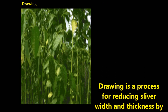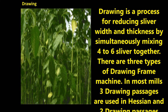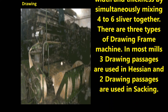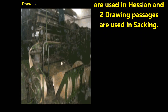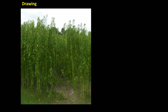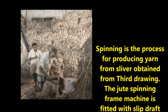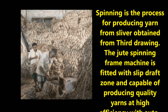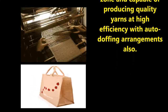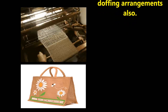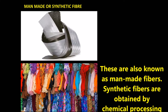Drawing is the process for reducing sliver width and thickness by simultaneously mixing four to six slivers together. There are three types of drawing frame machines. In most mills, three drawing passages are used for hessian, and two drawing passages are used in sacking. Spinning is the process for producing yarn from the sliver obtained from drawing. The jute spinning frame machine is fitted with a slip draft zone and is capable of producing quality yarns at high efficiency with auto-doffing arrangements.